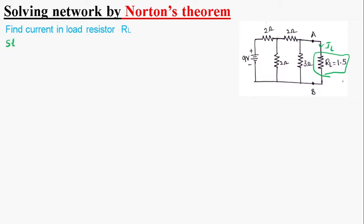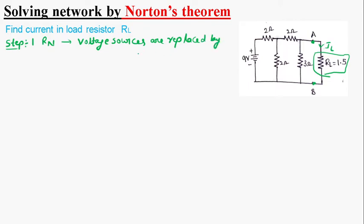In the first step of Norton's theorem, we will find Norton's resistance RN. To find Norton's resistance, we will observe the circuit from these two terminals, and all the voltage sources are replaced by their internal resistances. To measure the Norton's resistance, we have to replace the voltages with internal resistance.